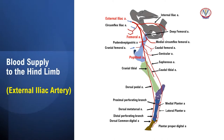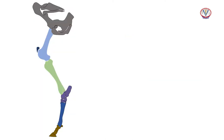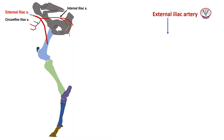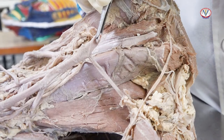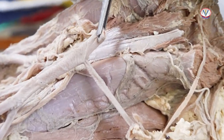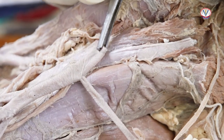The blood supply to the structures of the hind limb comes from branches of the external iliac artery, which arises close to the termination of the aorta. This artery enters the femoral canal to become the femoral artery, and before entering the canal it gives off the circumflex iliac artery and the deep femoral artery. The circumflex iliac artery gives off an anterior or superior branch and an inferior branch.